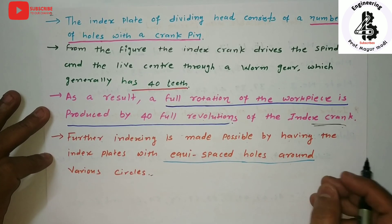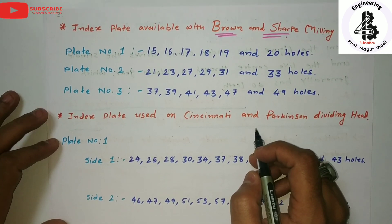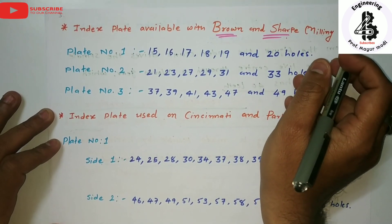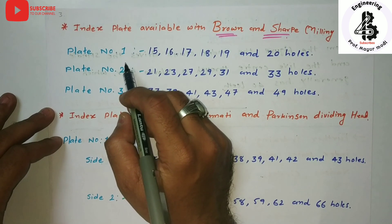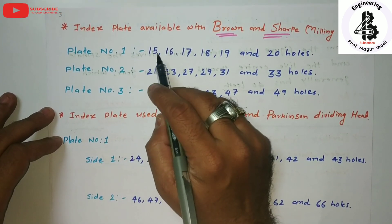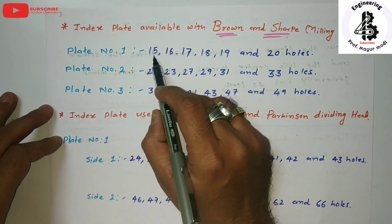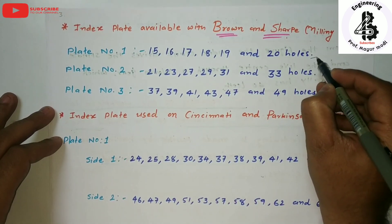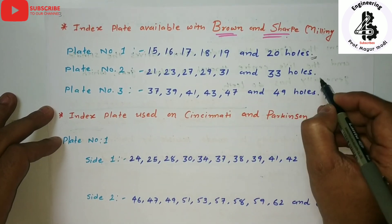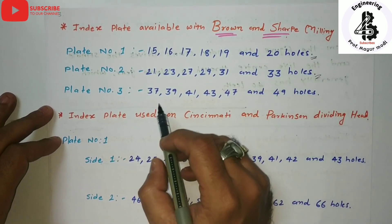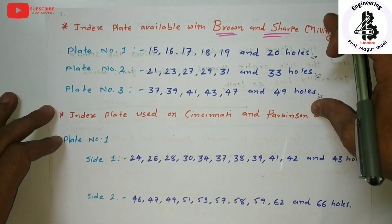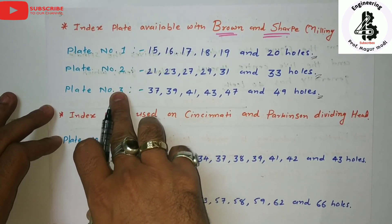Two standard plate systems are available for the production of gears. The first is the Brown and Sharp system, which has three different plate numbers, each with different hole circle systems. Plate number one has hole circles of 15, 16, 17, 18, 19, and 20. Plate number two has 21, 23, 27, 29, 31, and 33 hole circles. Plate number three has 37, 39, 41, 43, 47, and 49 hole circles. You can use any one of these plates according to your indexing requirement.